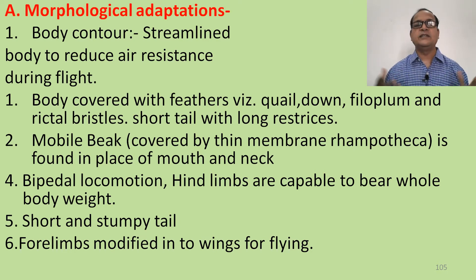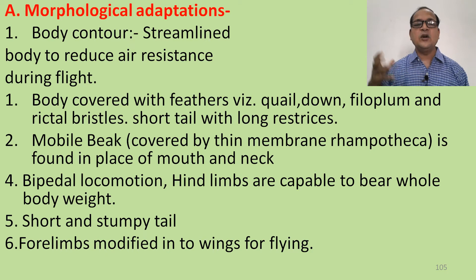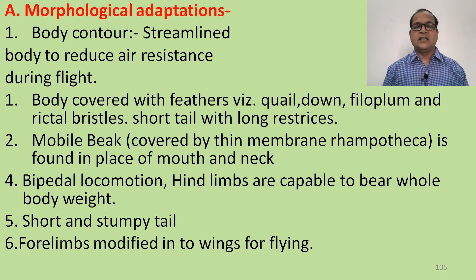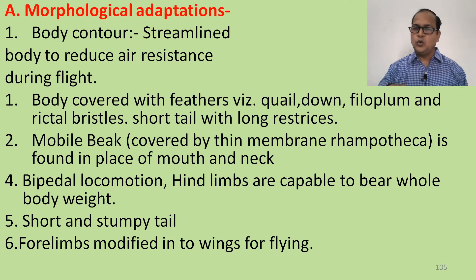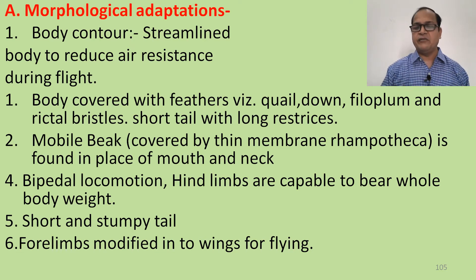A short tail with long tail feathers is present. A mobile beak covered with a thin membrane called the rhamphotheca is found in place of the mouth. Bipedal locomotion is there — the hind limbs are capable of bearing the whole body weight and are placed centrally to maintain balance. The short stumpy tail with long feathers helps make balance and change direction during flight. Four limbs are modified into wings for flying.